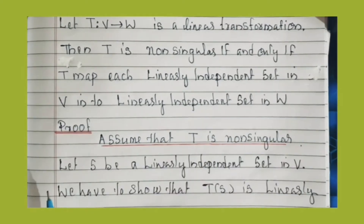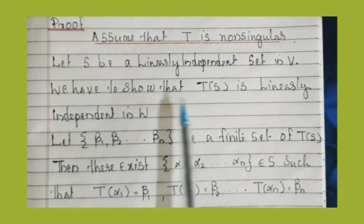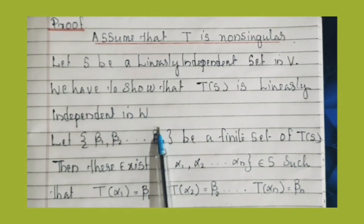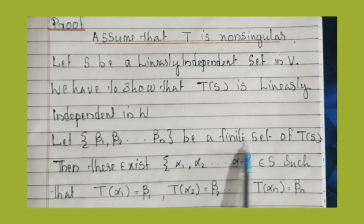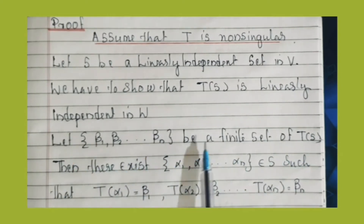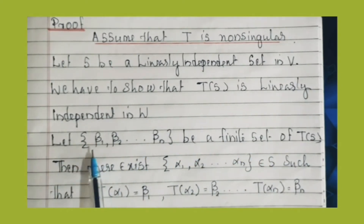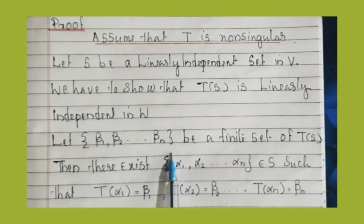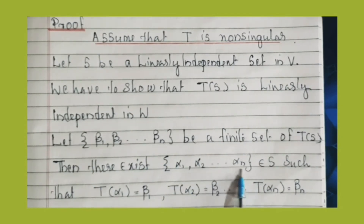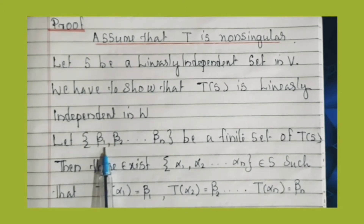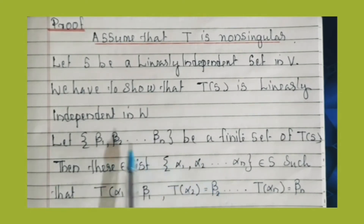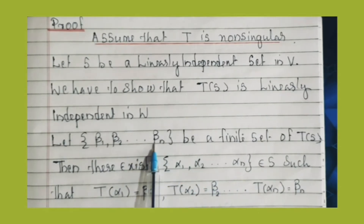We have to show that T of S is linearly independent in W. Let {β₁, β₂, ..., βₙ} be a finite subset of T(S). Then there exist {α₁, α₂, ..., αₙ} belonging to S such that T(α₁) = β₁, T(α₂) = β₂, ..., T(αₙ) = βₙ.